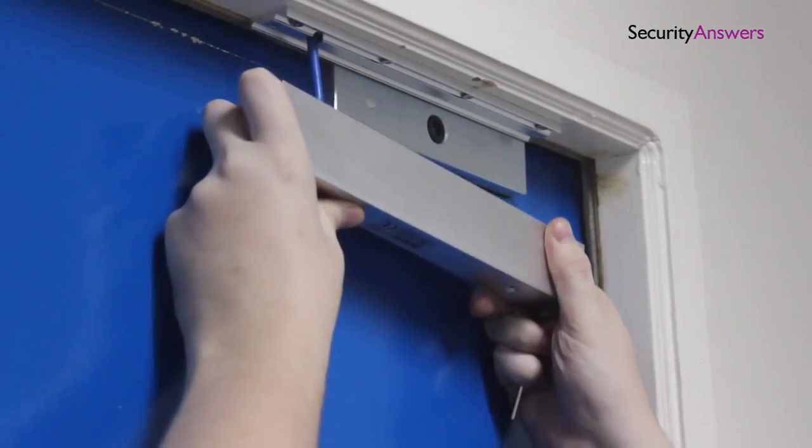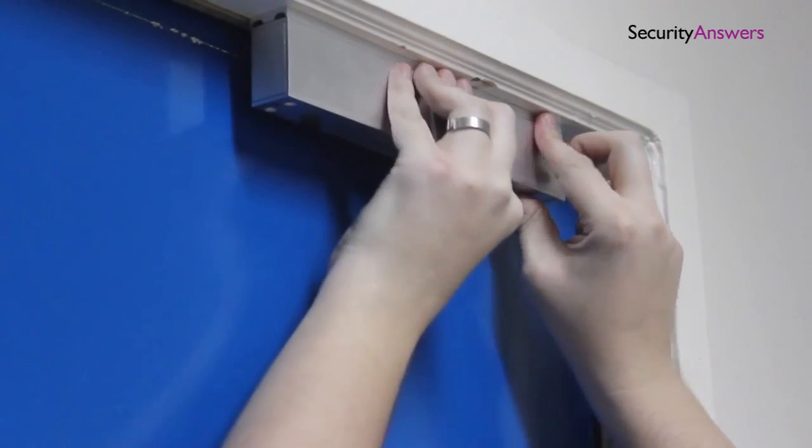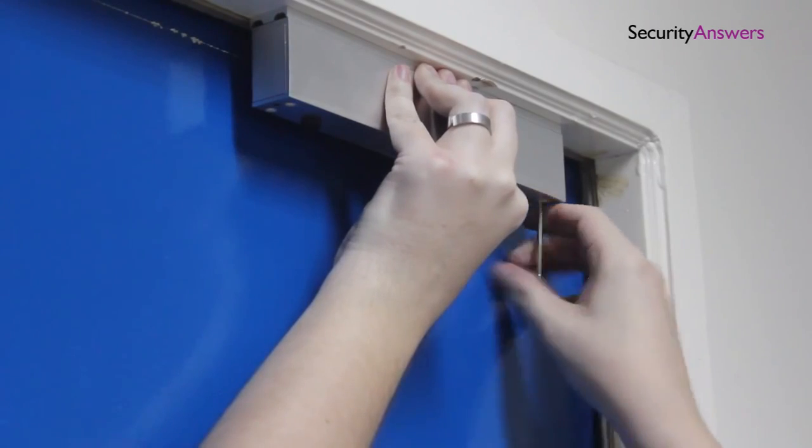Now thread your cable through the hole you made and position the lock to ensure the fitment is correct. If everything lines up correctly, go ahead and tighten into place using the provided screws.